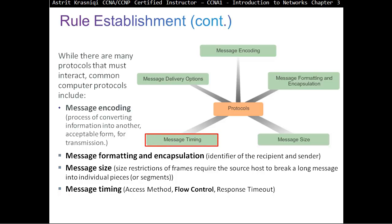Then we have timing — message timing. Access method: how are we going to access the network? For example, are we using CSMA/CD (collision detection) or collision avoidance? Then we look at flow control. If we start sending 50 messages and there are no errors, we can increase that number. If there are too many errors, we decrease the number of segments we are sending.